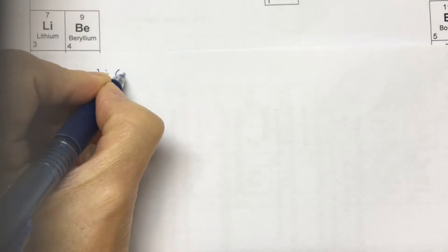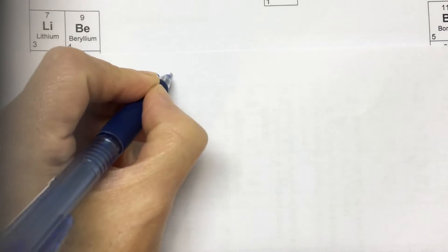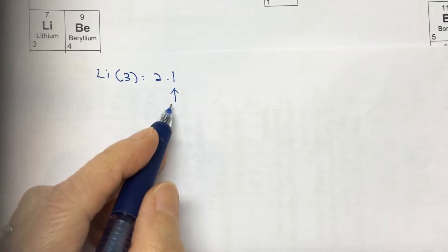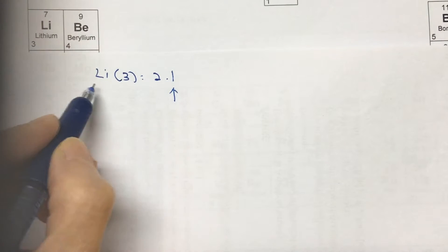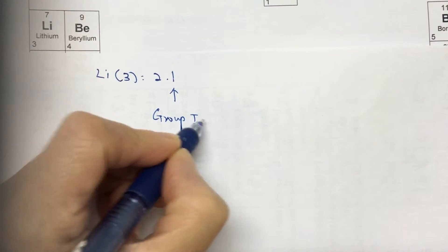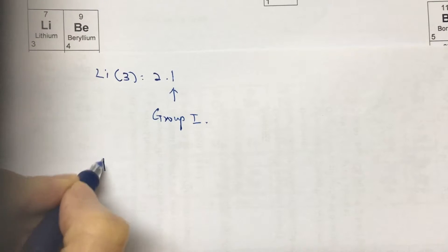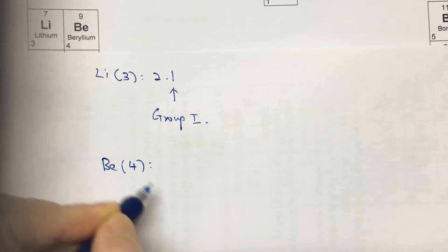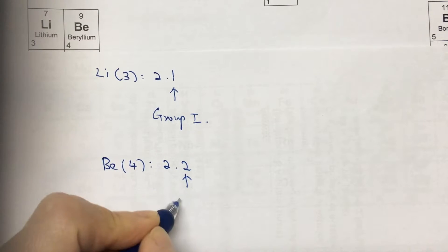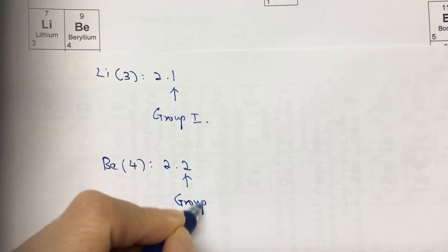Lithium, 3. The electronic structure would be 2.1. This is the number of valence electrons which determines the group number. So lithium belongs to group 1. Look at beryllium, another example. Beryllium has atomic number 4, so the electronic configuration would be 2.2. Again, look at the valence number of electrons is 2. Therefore, beryllium belongs to group 2.